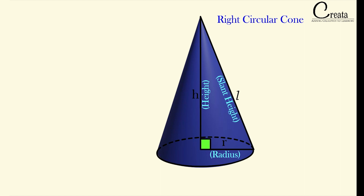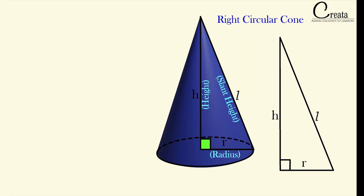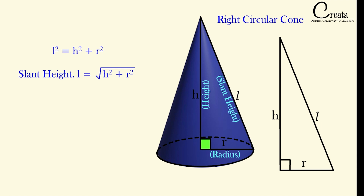Are you able to observe a right angle triangle inside this cone? The hypotenuse is L and H and R are the two legs of this triangle. So we can apply Pythagoras theorem: L² = H² + R², that is slant height L = √(H² + R²). The cone has three dimensions — H, R, and L. If we are given any two, we can find the third with the help of the Pythagoras theorem. This is a very important fundamental.